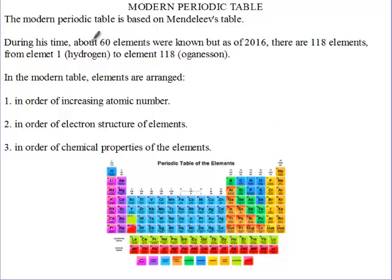The modern periodic table is based on Mendeleev's periodic table. During Mendeleev's time, he knew about only 60 elements. But as of 2016, there are 118 elements that have been approved and accepted, with the first being hydrogen and the last being oganesson.